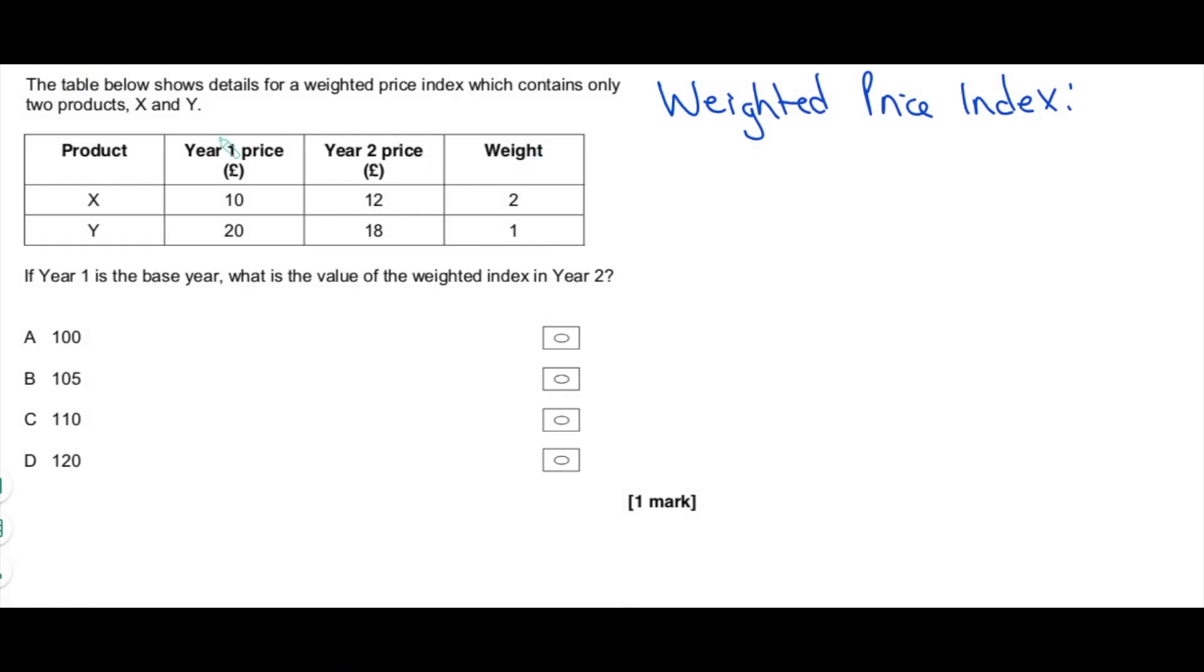What are we doing? Again, the first few lines, waffle. We've got eyes. We can see what the table is showing us. So here's the question. If year one is the base year, what is the value of the weighted index in year two? So the real question is, how do we calculate a weighted price index? Well, here is the process.